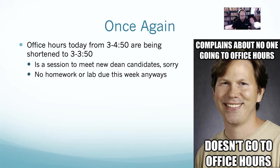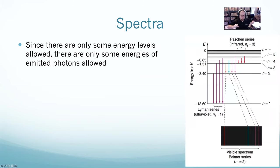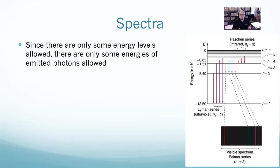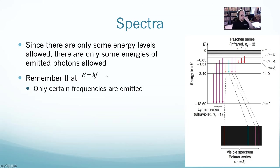Let's get back into Niels Bohr. As we covered last time, he said that all electrons exist at these set radii — these set energy levels. What we were describing was the idea of emission spectra. Bohr's model was created to explain emission spectra, and also that emission spectra proved his model of the atom. Since only certain energy levels are allowed — since they are quantized — only some energies of emitted photons are allowed.